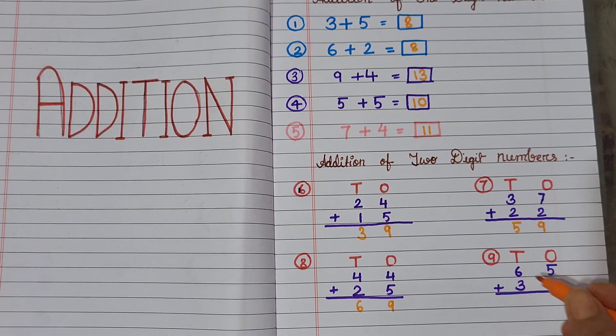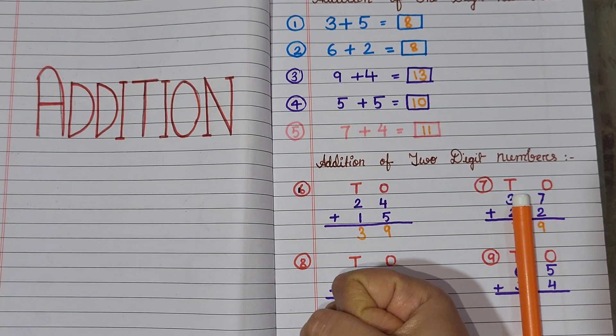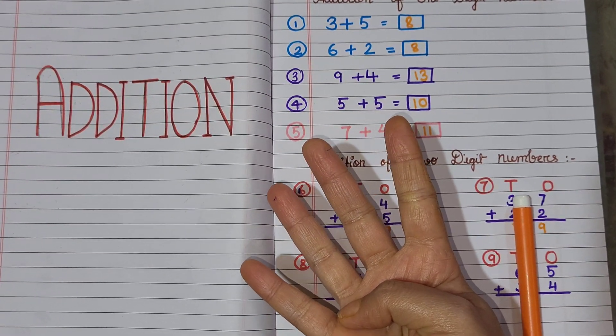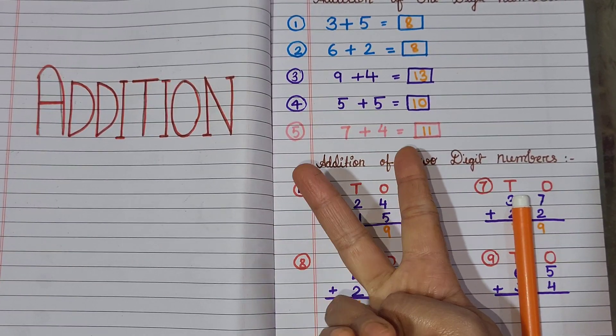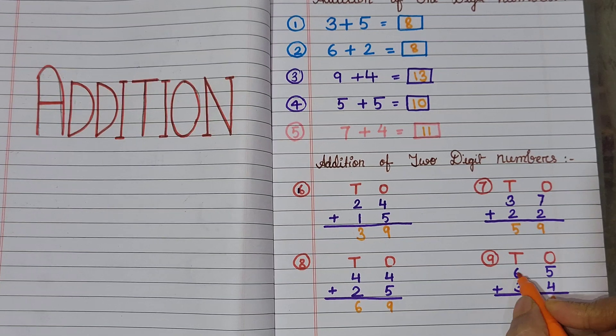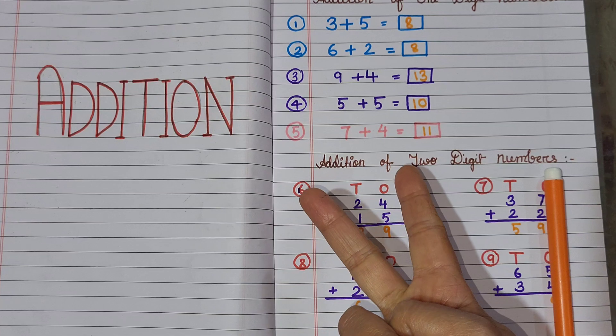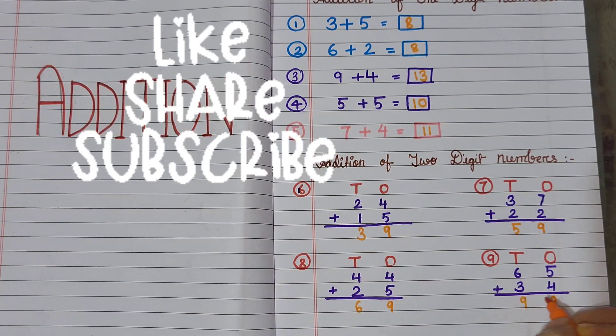Next, again ones place. 5 and 4 ko jodenge. 5 in my mind, 4 fingers up. 5 ke baad konsa number? 6, 7, 8, 9. Tens: 6 and 3 ko jodenge. 6 in my mind and 3 fingers up. 7, 8, 9. That means 99.